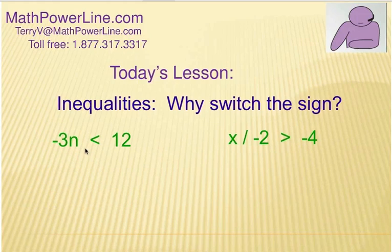Now, look at the first example. Negative 3n is less than 12. The question is, do we have to switch less than and make it greater than? Well, in this case, we do because we're going to be dividing each side by a negative 3 because we want n by itself. And so n, and then over here is negative 4.